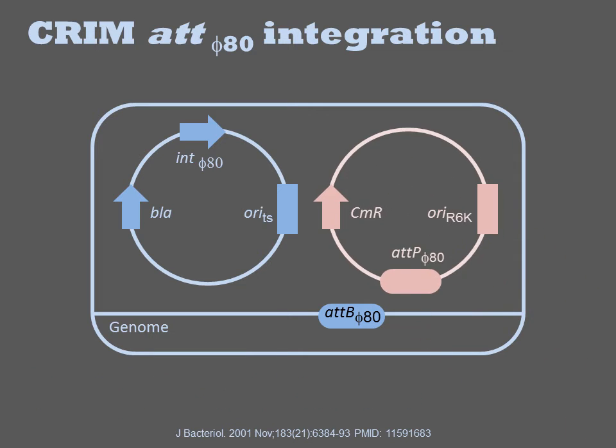The cells are then transformed again with the CRIM plasmid. This plasmid has a conditional origin of replication called R6K. In a cell that lacks the pi gene, this origin cannot replicate, and thus the plasmid is only transiently present in the cell. It also contains an antibiotic selection marker, CMR, and the att-P site.